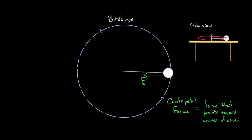It'd be like answering the question 'what force balances the force of gravity while the ball's on the table?' with the answer 'the upward force.' We knew it had to be an upward force, but that doesn't really tell us what force it is. Similarly, just saying 'the centripetal force' just tells us what direction the force points — it doesn't tell us what type of force it is. The centripetal force isn't a new type of force.